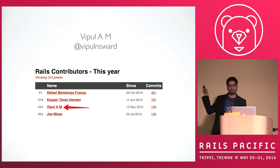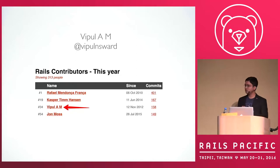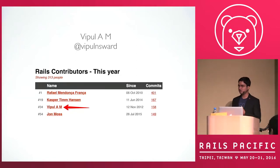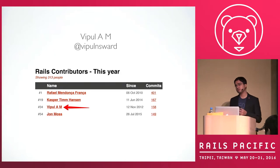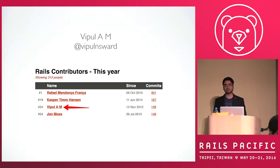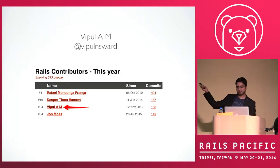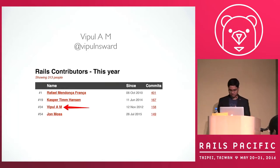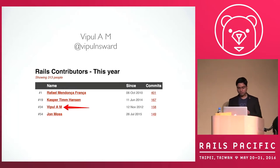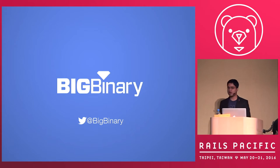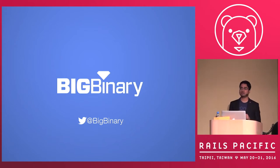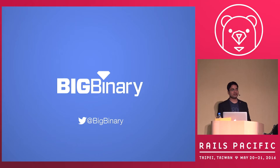My name is Vipul. I go by Vipul and Sward on Twitter and GitHub. I'm part of the Rails issues team, and I help triage Rails issues and contribute. This is me on the Rails contributors list. When I'm not doing contributions, I spend most of my time at my company, which is called Big Binary, which was spoken about previously in the hiring session.